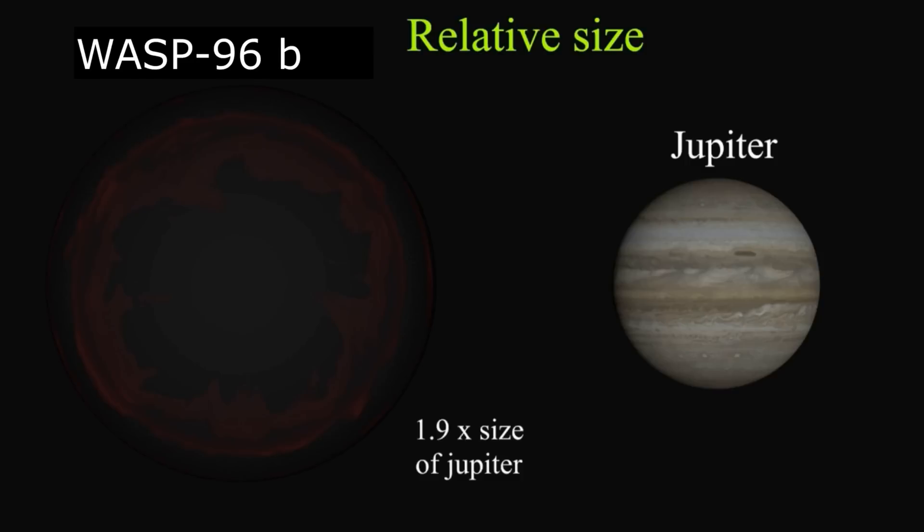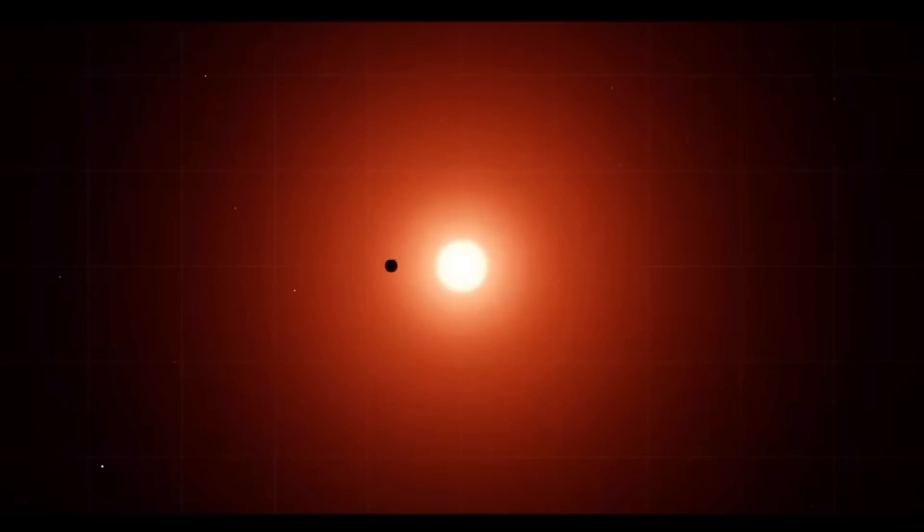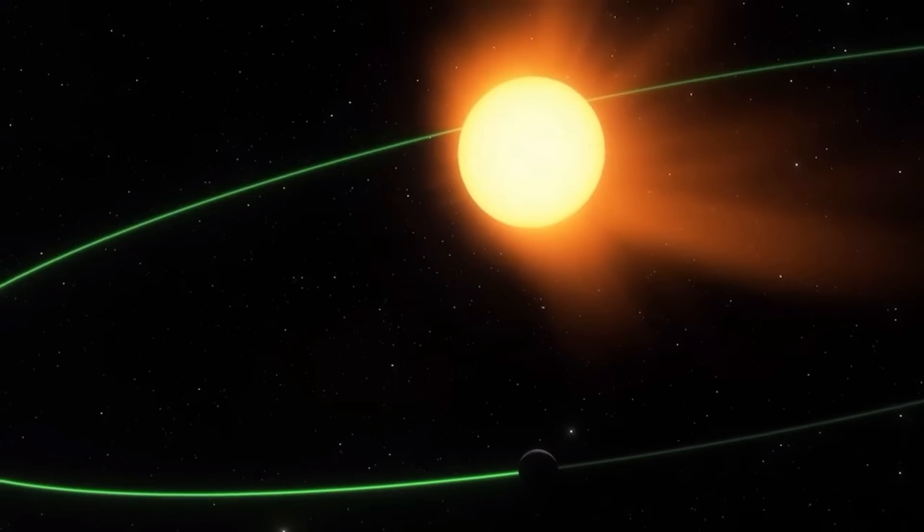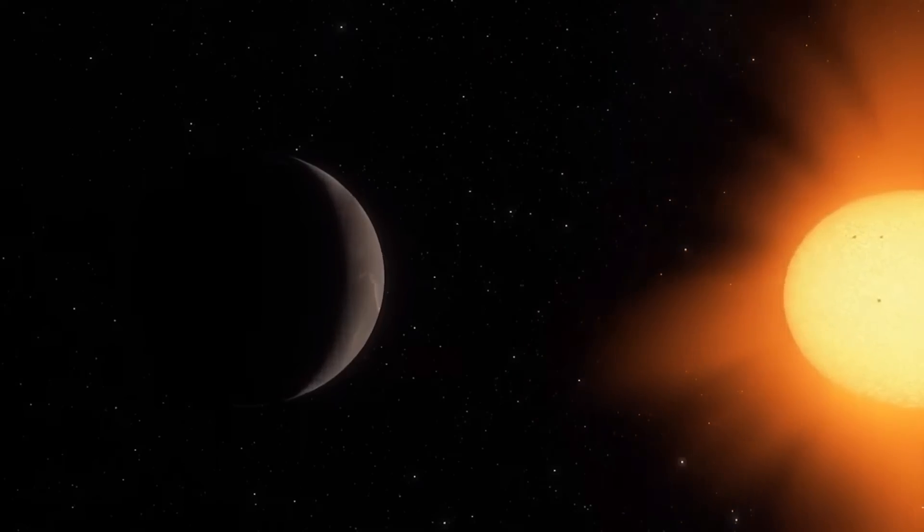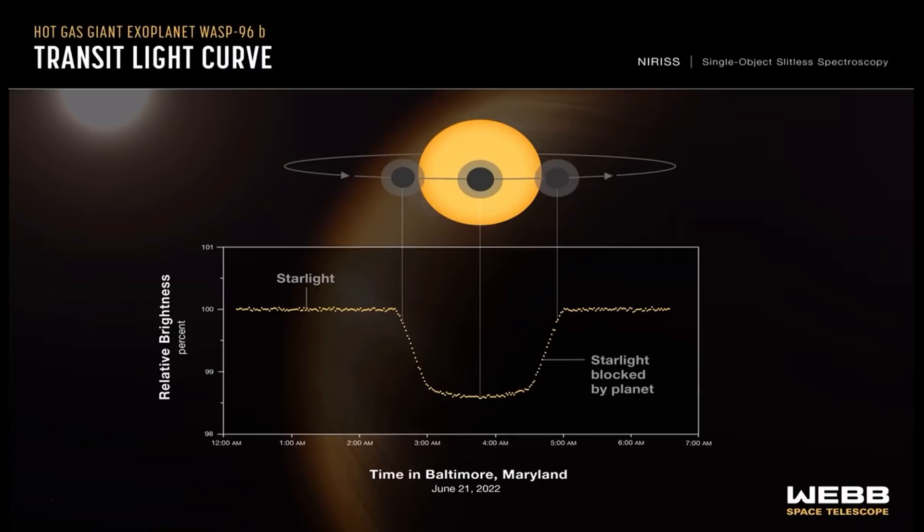Its mass is half that of Jupiter, and its diameter is slightly larger. The exoplanet rotates incredibly close to its star, at a distance nine times less from Mercury to the Sun. A year on this planet lasts only three and a half Earth days, which is a fascinating object to study.